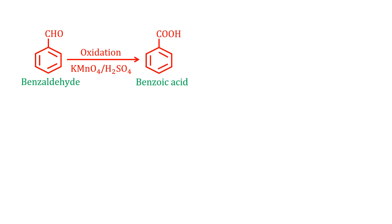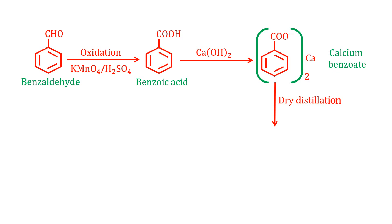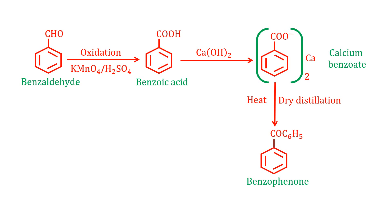Benzoic acid reacts with calcium hydroxide to give calcium benzoate. Then heat and dry distillation gives Benzophenone. Benzoic acid reacts with calcium hydroxide — you can do it in one step.